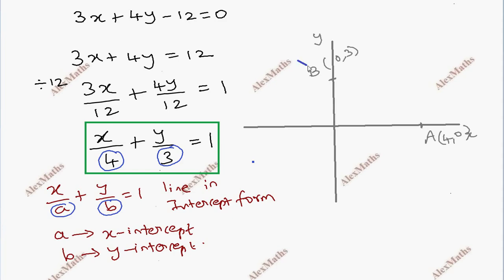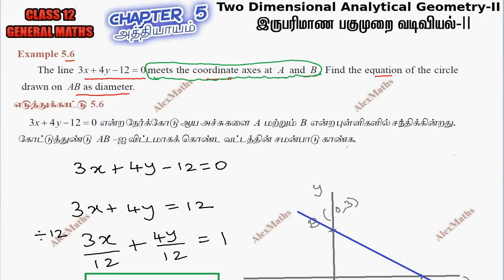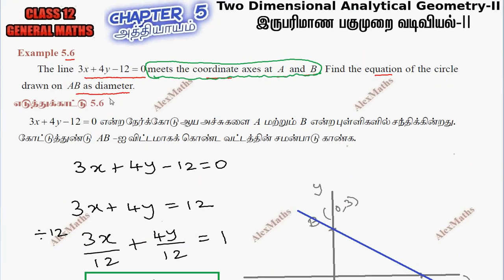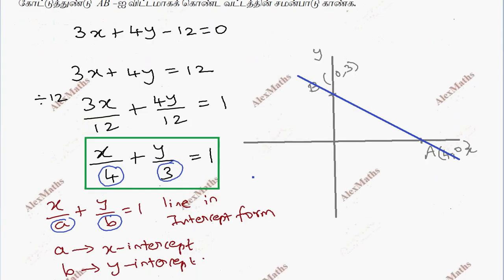This is a b, this is a circle. A b diameter, this is drawn on a b as diameter.